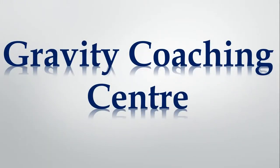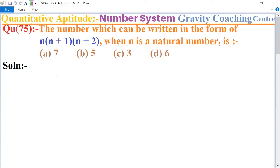Welcome to our channel Gravity Coaching Center. Chapter Number System, Question Number 75: The number which can be written in the form of n(n+1) into (n+2)